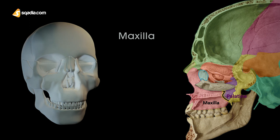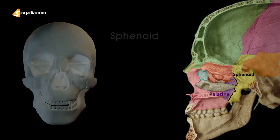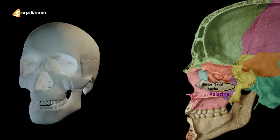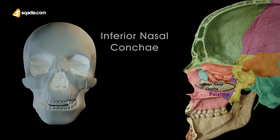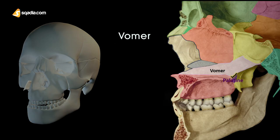The palatine bone helps house the primary pain signaling pathways for the mouth and the teeth, as they house the greater palatine foramina, which are the openings that allow the palatine nerves to pass through. The palatine bone articulates with five bones: maxilla, sphenoid, ethmoid, inferior nasal concha, and vomer.